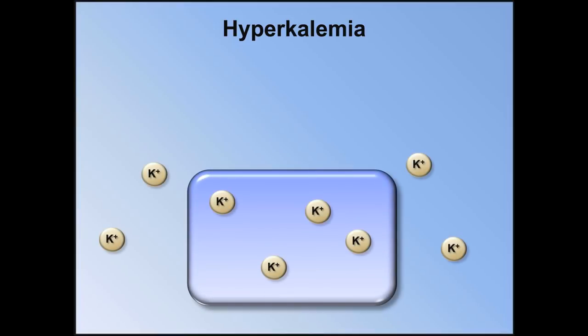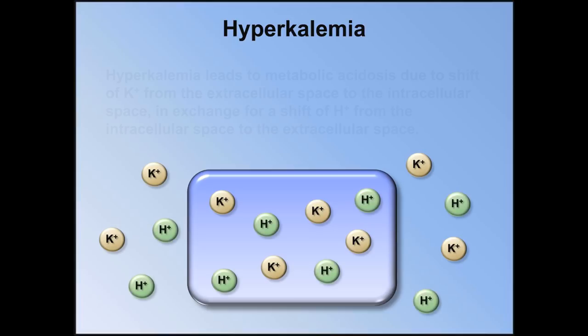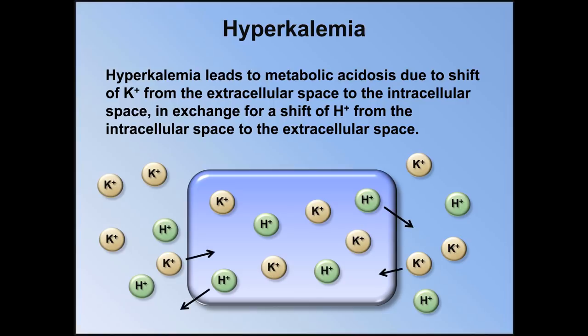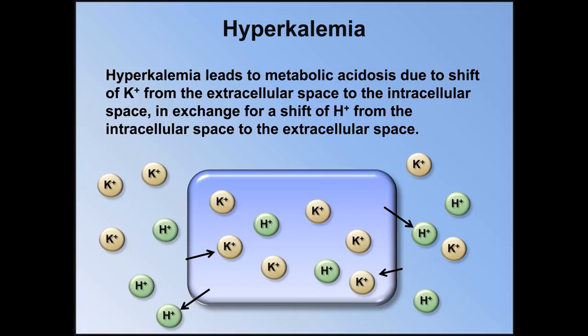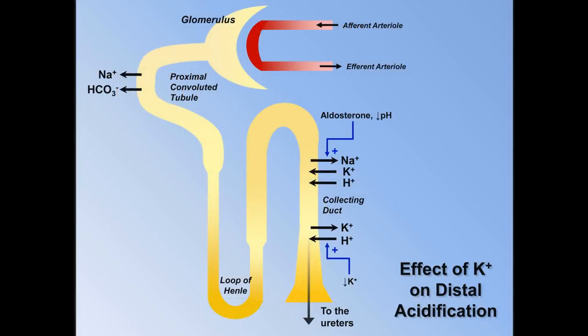The final etiology is hyperkalemia. There are two major mechanisms by which hyperkalemia can lead to a metabolic acidosis. For the first, in the presence of hyperkalemia, there is a shift of potassium from the extracellular space to the intracellular space in exchange for a shift of hydrogen from the intracellular space to the extracellular space. For the second mechanism, hyperkalemia interferes with the collecting duct process of potassium reabsorption simultaneous with hydrogen excretion, thus preventing hydrogen excretion from occurring normally. This can physiologically mimic a mild type 1 RTA.